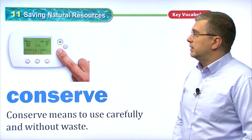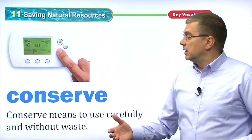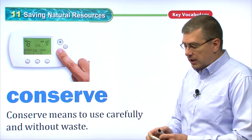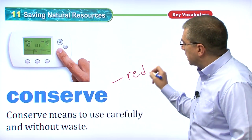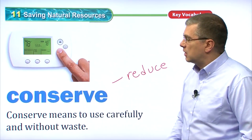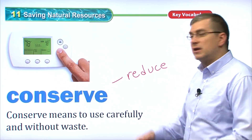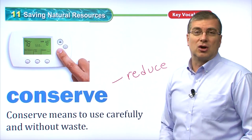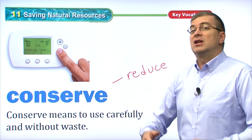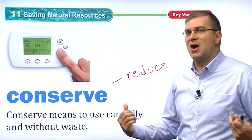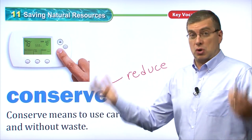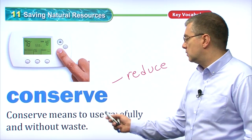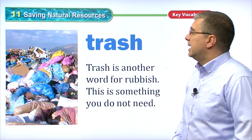One way to avoid pollution is to conserve. Conserve means to use carefully and without waste. Conserve is very similar to reduce — we see it a lot when talking about the environment. To conserve our resources means don't use so much, use carefully, don't waste. For example, turn down your heating or air conditioning — if it's too hot, open a window; if it's too cold, put on a sweater instead of turning up the heat. Conserve the amount of energy you use.